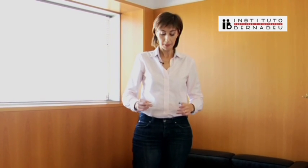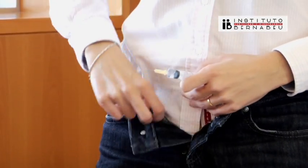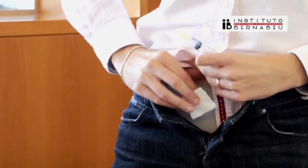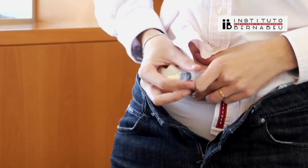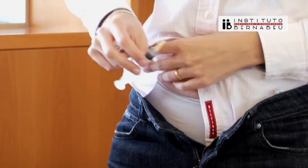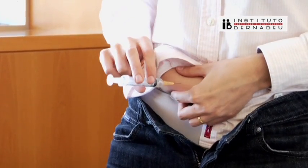Uncover your lower abdomen, which is where you will make your injection. Rub the area around your belly button with an alcohol-soaked swab. Pinch the clean skin and inject the medication.